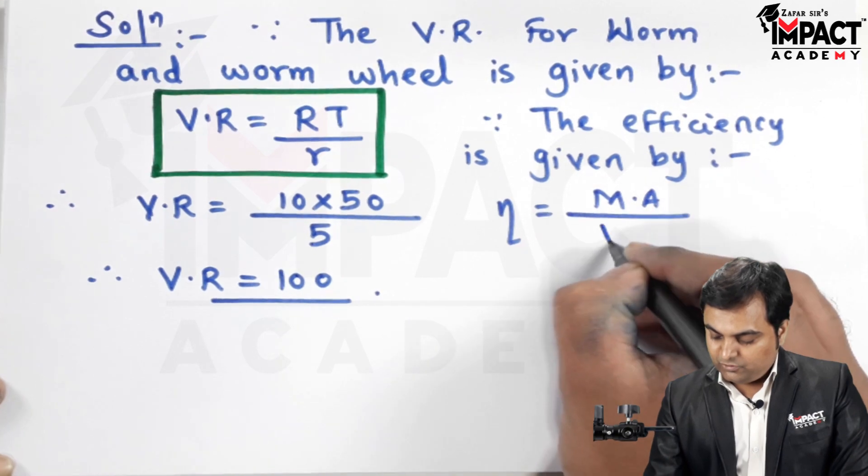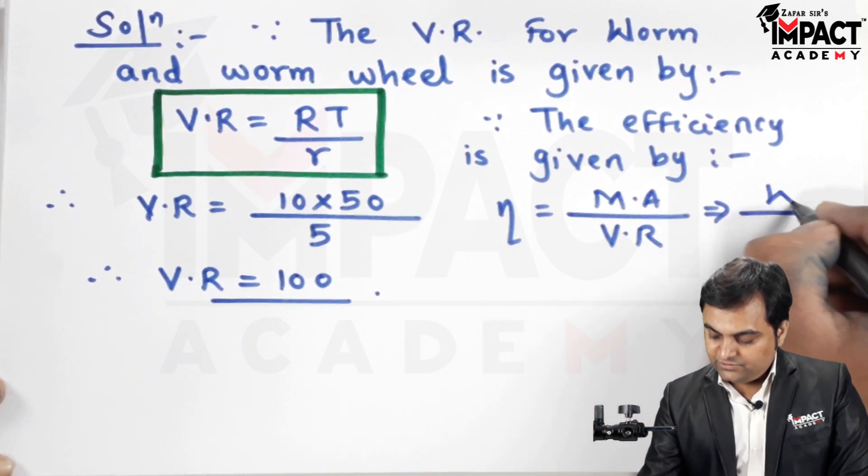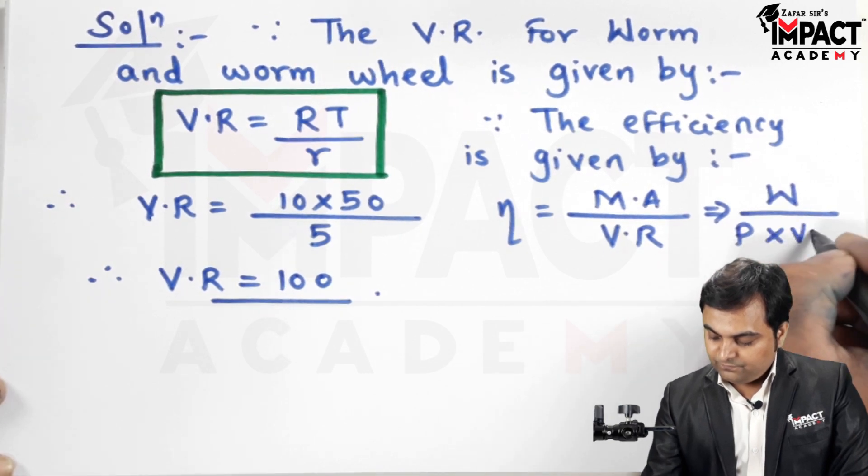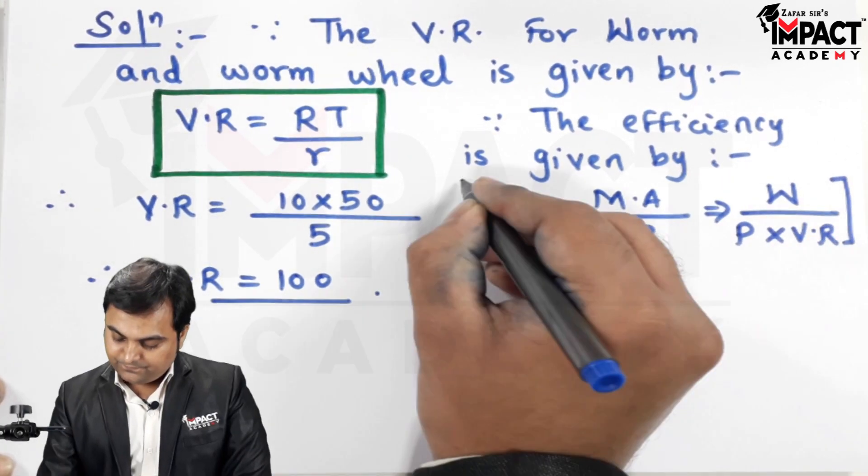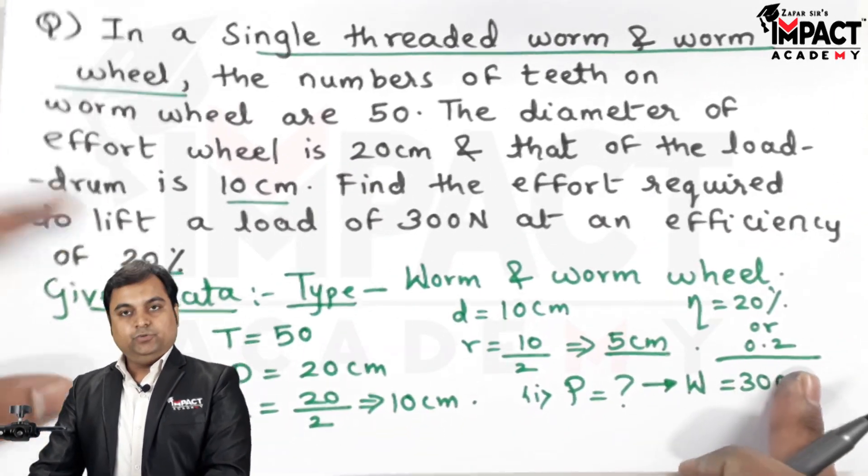It is MA upon VR. Mechanical advantage is W upon P into VR. So therefore efficiency is 0.2.